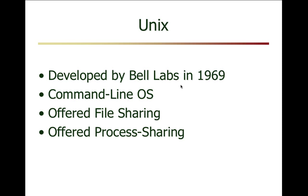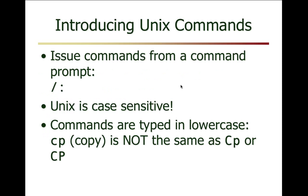Unix was developed by Bell Labs in 1969 as a command line operating system. It was never meant to actually support a GUI, which is interesting. However, most breeds of Unix have GUI front ends these days, like SunOS and SunWindows. The purpose of this lecture is to review the basic navigational system of the command line interface for Unix.